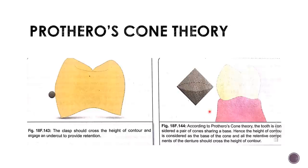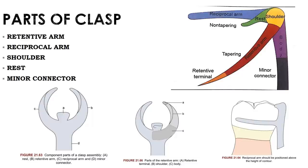According to Prothero's cone theory, the tooth is considered a pair of cones sharing a base. The height of contour is considered as the base of the cone — that is the most bulged area of the tooth — and all retentive components should cross the height of contour.